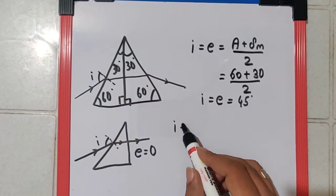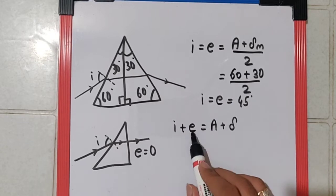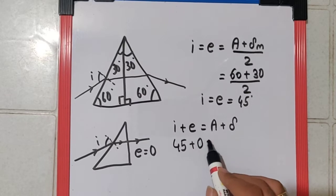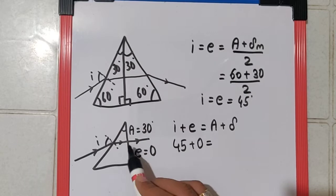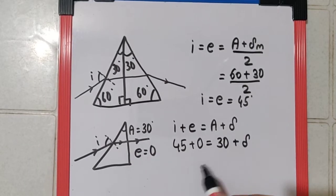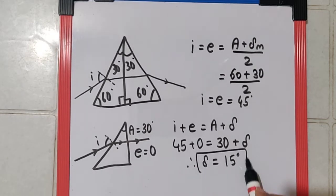So this time I need to use I + E = A + δ. Now since E is 0, I is 45, which is 45 + 0, and this time the angle of prism A is only 30 degrees since the second prism is removed. And so the deviation found is 45 minus 30 equals 15 degrees, which is your final answer.